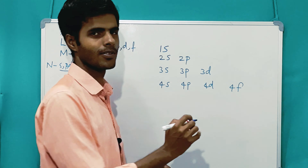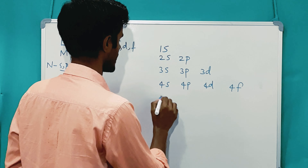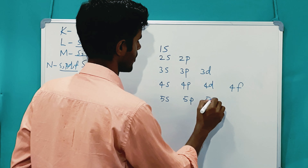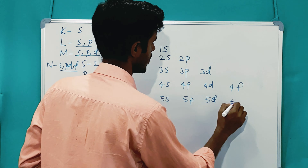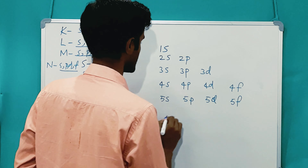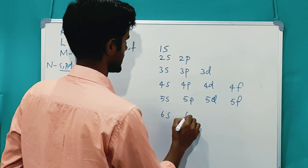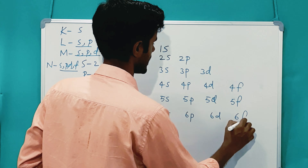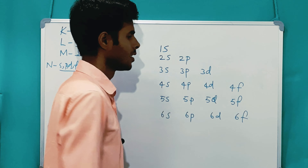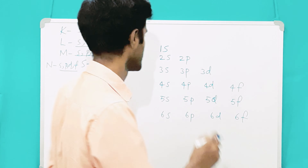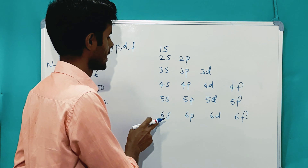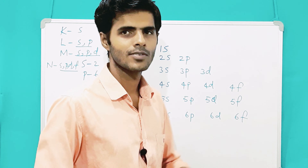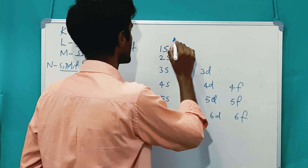In the fourth shell we also have 4F. Then similarly 5S, 5P, 5D, 5F, then 6S, 6P, 6D, 6F. From the second to the last sixth row, we need to find out which subshell is having the highest energy — that is what we are going to determine here.